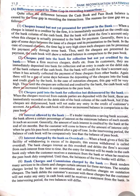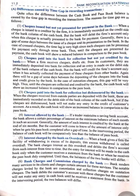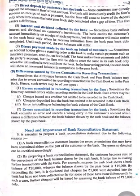Other causes include: interest allowed by the bank — if the bank allows interest and we have no information about it, we will not credit that amount and differences will arise; and if there is an overdraft, the bank charges interest on the overdraft, plus bank charges and commission. Due to all these terms, there will be differences in the cash book and pass book balances.